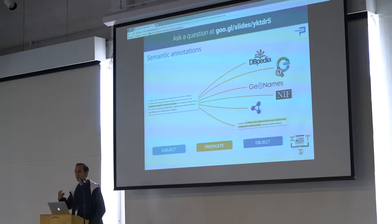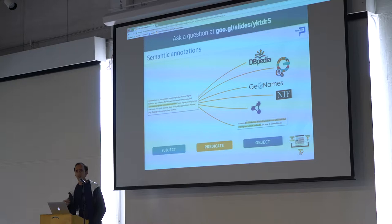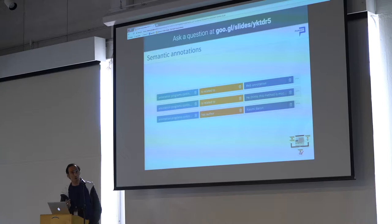With Pundit, you select a part of text and you can create a relation with one or more Linked Open Data entities, another text fragment, or a web page. All these relations are described by a predicate, so what you're actually doing is building semantic triples. This is how it looks inside the Pundit user interface.